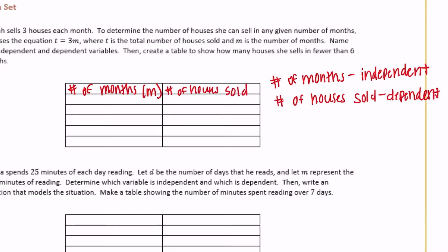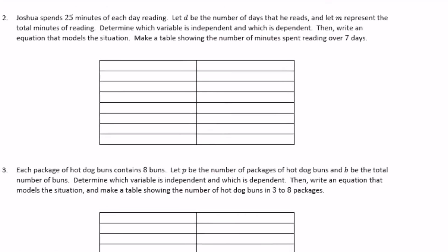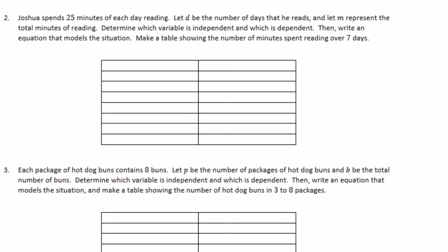The number of houses sold is t, and t equals 3m — three times the number of months. We want fewer than six months, so we'll use five, four, three, two, and one. One month times three is three houses. Two months times three is six. Three months times three is nine. Four months times three is twelve houses.